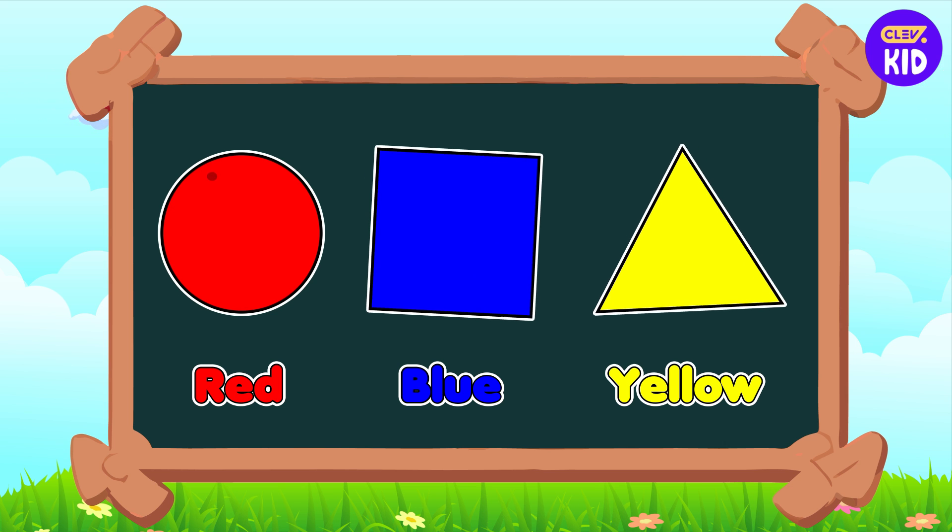All the secondary colors are made by mixing these three colors together in a special sequence. Let's see how secondary colors are formed.